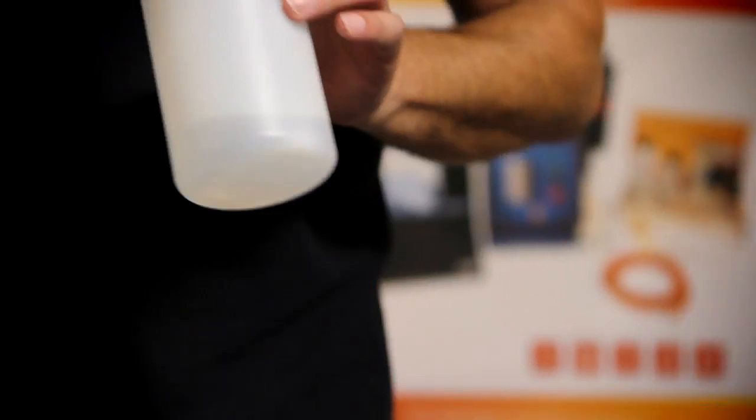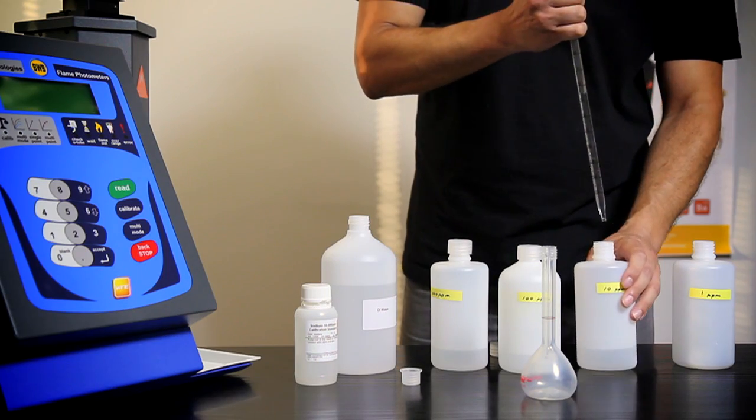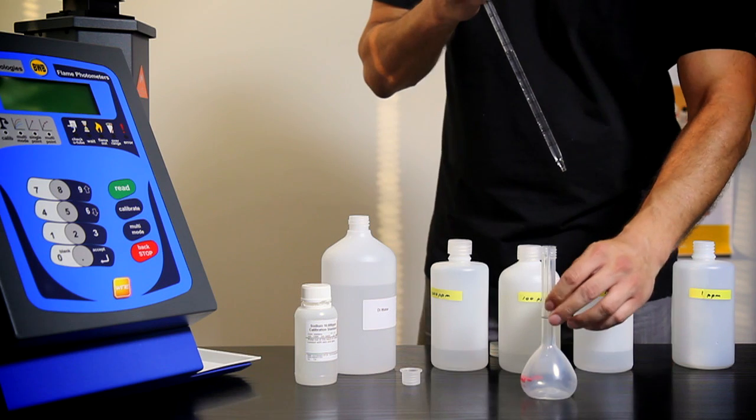Finally, repeat the whole process again using 10 ml of your 10 ppm standard. This will form your 1 ppm standard.